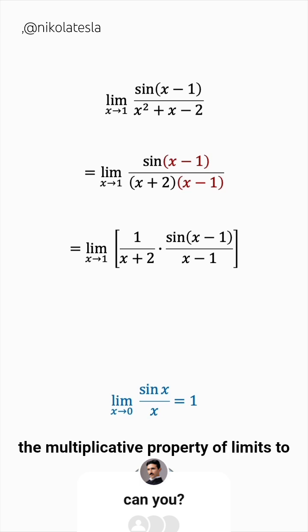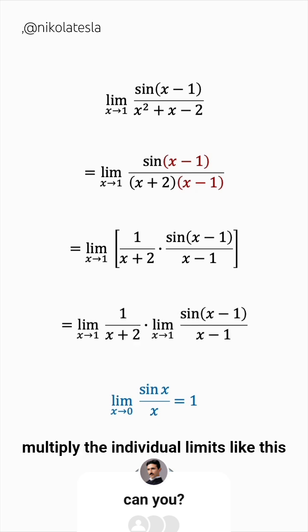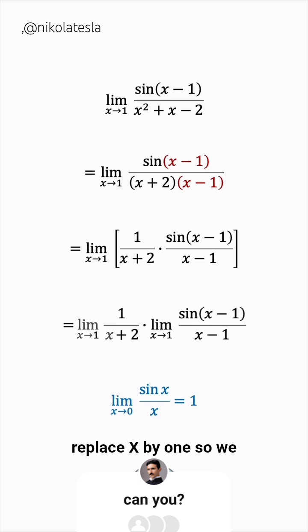And now we can use the multiplicative property of limits to multiply the individual limits, like this. The first limit is a rational function, it's very simple, it's defined at 1, so we can simply replace x by 1.